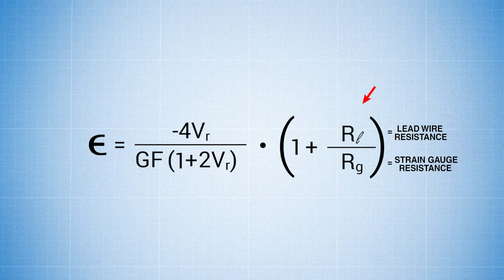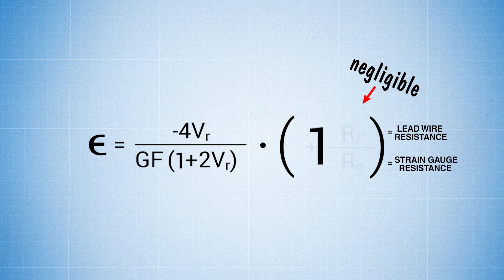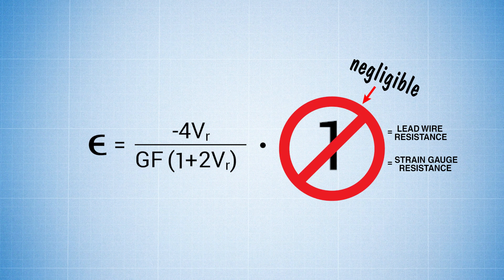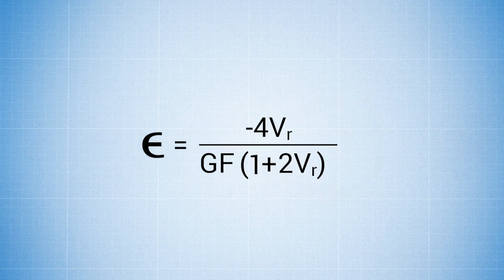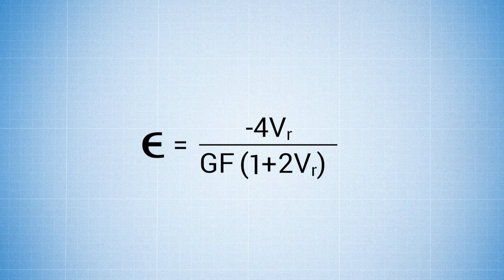In our case, the lead wire resistance is really negligible, so 1 plus Rl over Rg can be considered as 1, so we just omit that. Now we are left with Epsilon equals negative 4Vr over GF times 1 plus 2Vr.